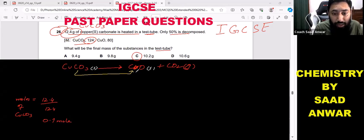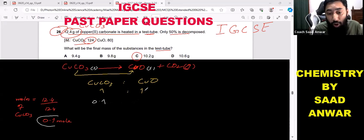Now guys, you can see the ratio of copper carbonate and copper oxide. According to the balanced chemical equation, copper carbonate is one mole, so I can say copper oxide will be one mole. But the copper carbonate given to us is 0.1 mole, so obviously copper oxide should be 0.1 moles.